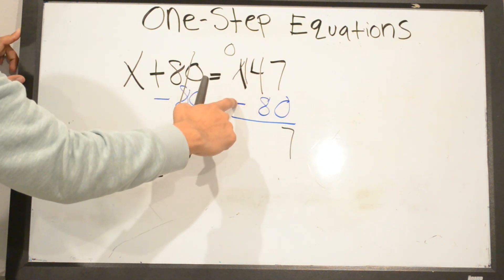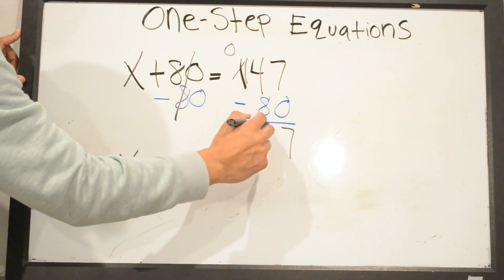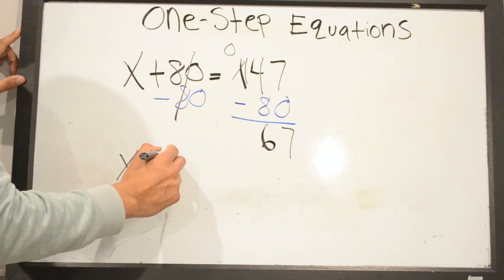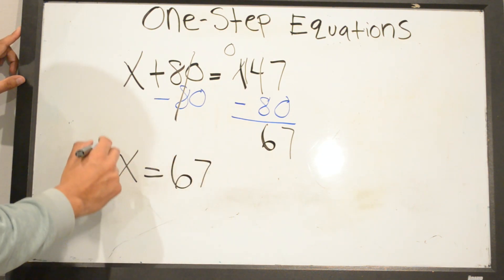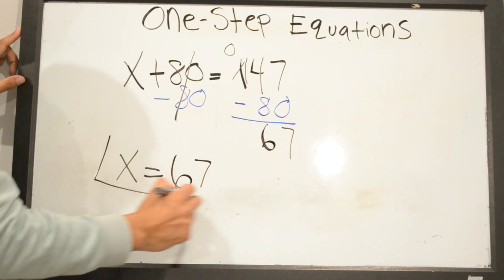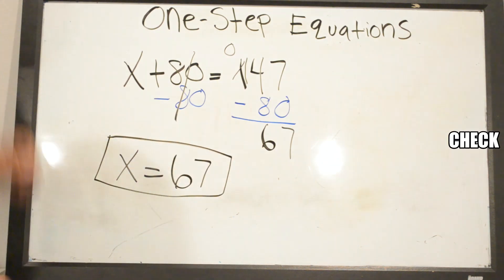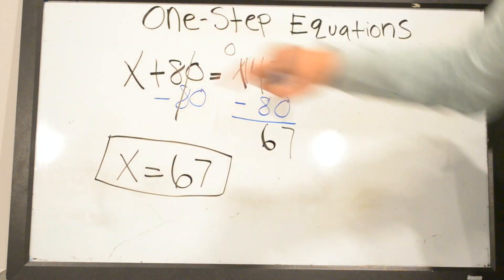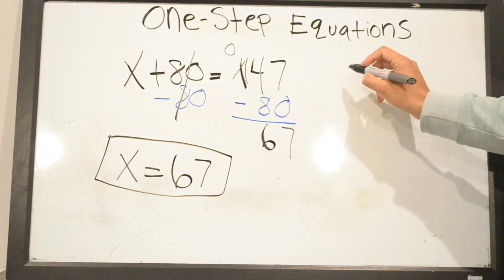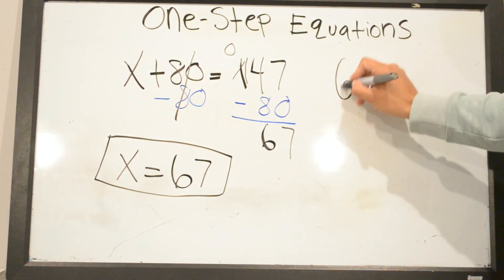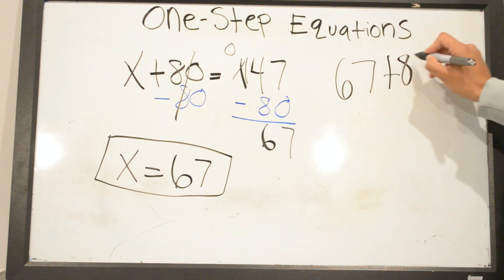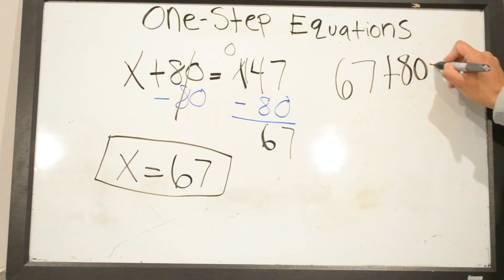So X equals 67. We're going to check it by plugging 67 in for X: 67 plus 80 equals 147.